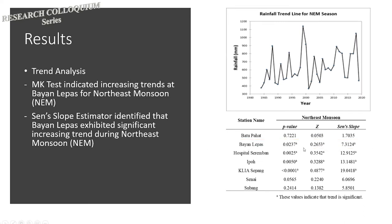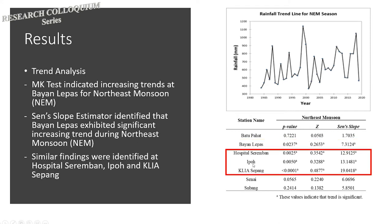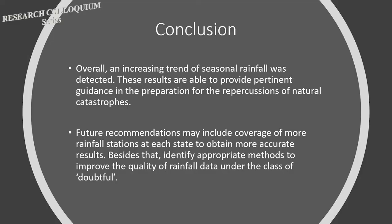For the trend analysis results, Bayan Lepas showed an increasing trend. Based on the z-value for northeast monsoon rainfall, the trend is identified as significant since the p-value is less than 0.05, and Sen's slope estimator showed a larger value compared to Batu Pahat. Similar findings were identified at Hospital Seremban, Ipoh, and KLIA Sepang, which have large Sen's slope values when the p-value is less than 0.05. These indicators suggest these locations may experience high rainfall amounts during the northeast monsoon season.